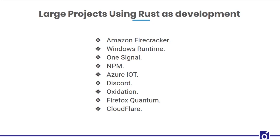Next project is Discord. At Discord they have seen success with Rust on both the client side and server side. They use it on the client side for video encoding pipelines for Go Live, and on the server side for Elixir News. Most recently, they drastically improved the performance of a service by switching its implementation from Go to Rust.